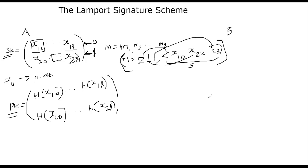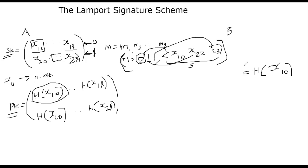Let me explain what Bob will do to verify the signature. Bob sees X10 and computes hash of X10. The first component corresponds to the first bit. He uses the message to figure out whether to compare against the first row or the second row of the public key. Since the first bit is zero, he compares hash(X10) against the corresponding public key value PK[1][0]. If it is equal, he moves to the next bit.